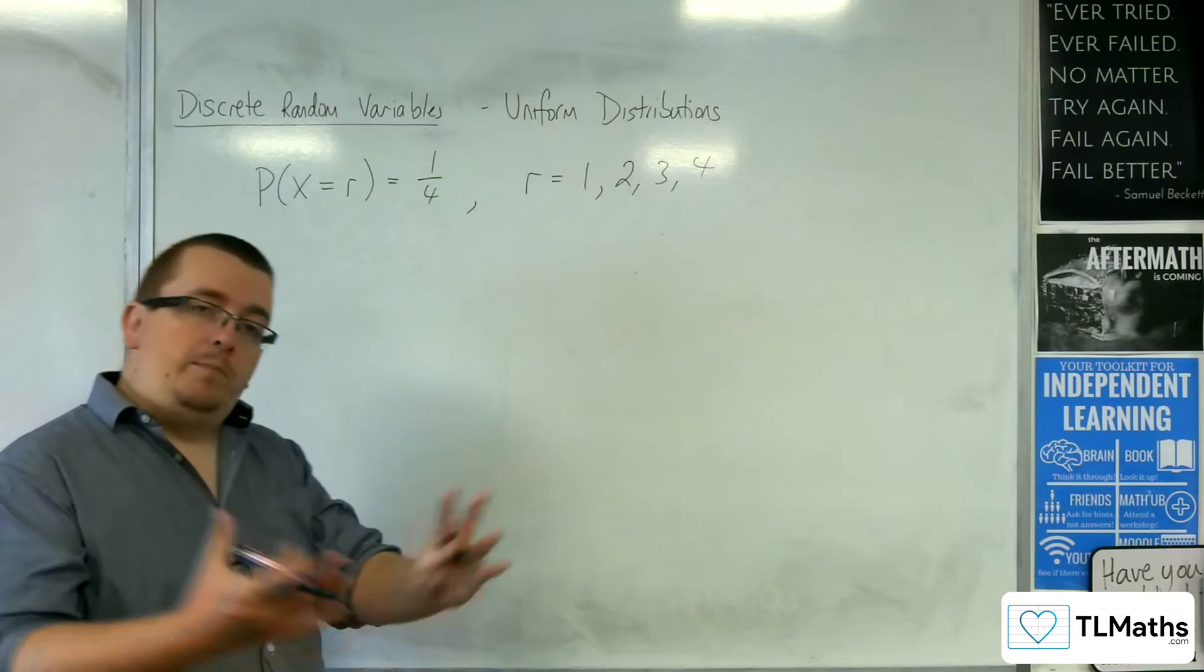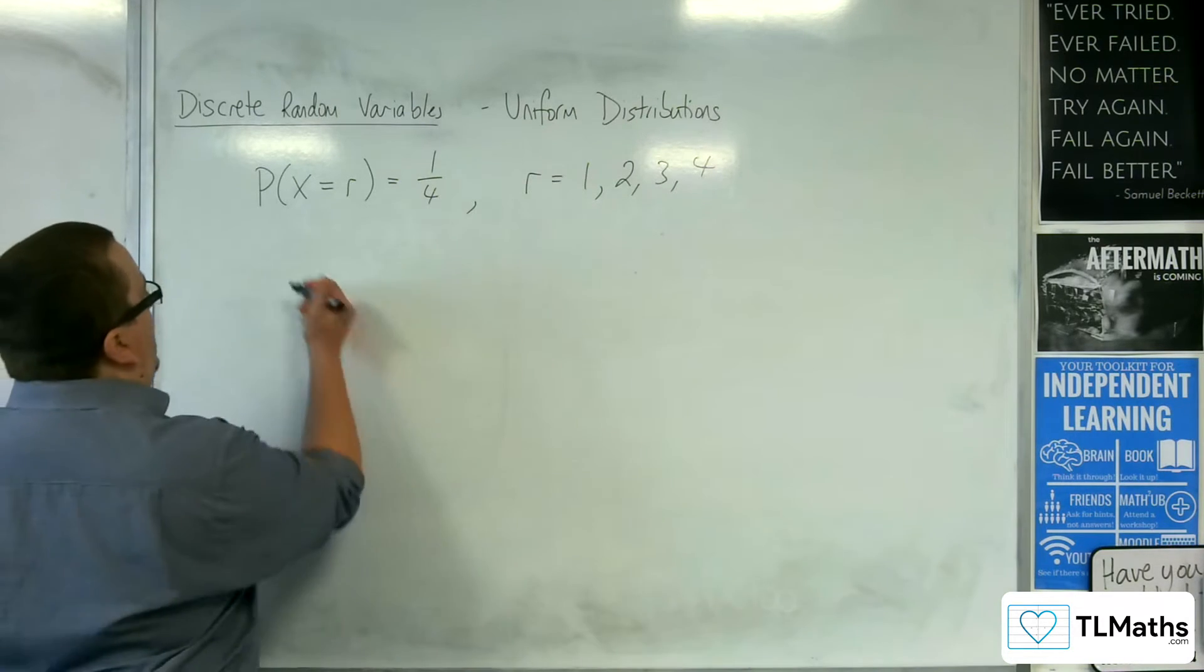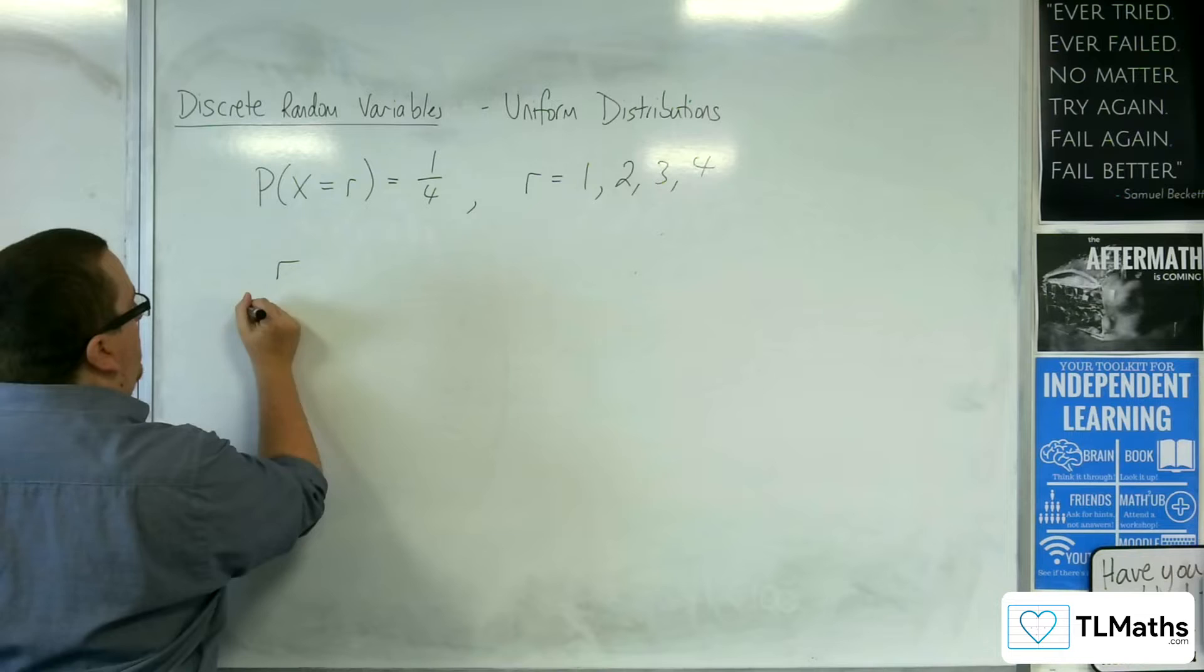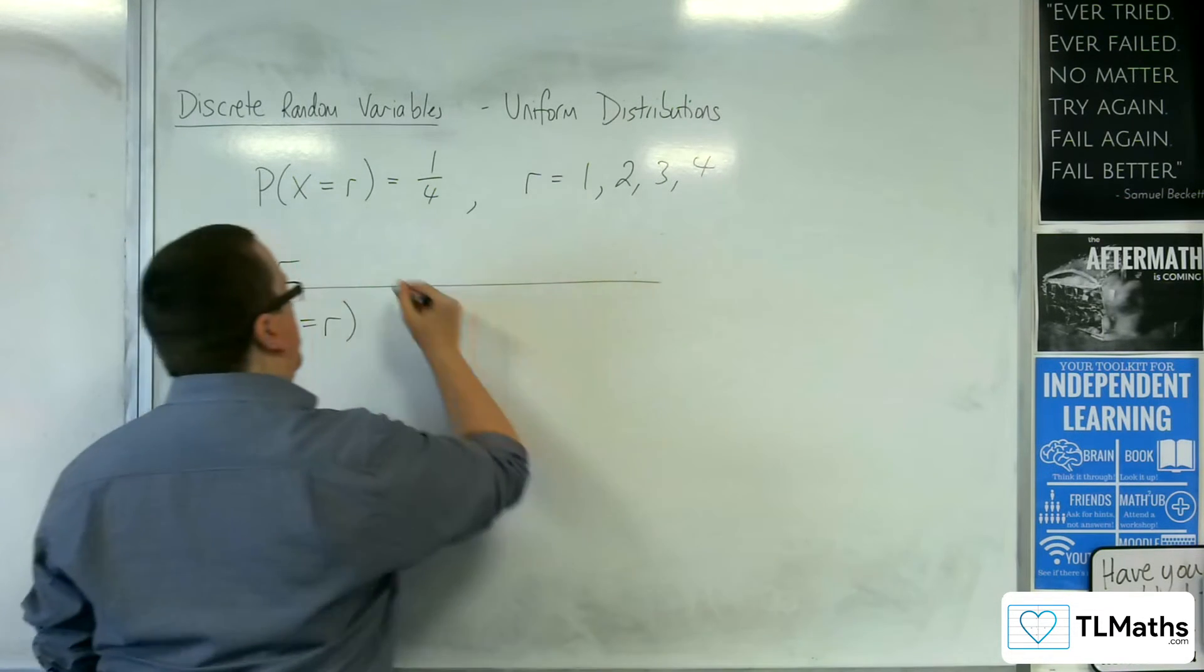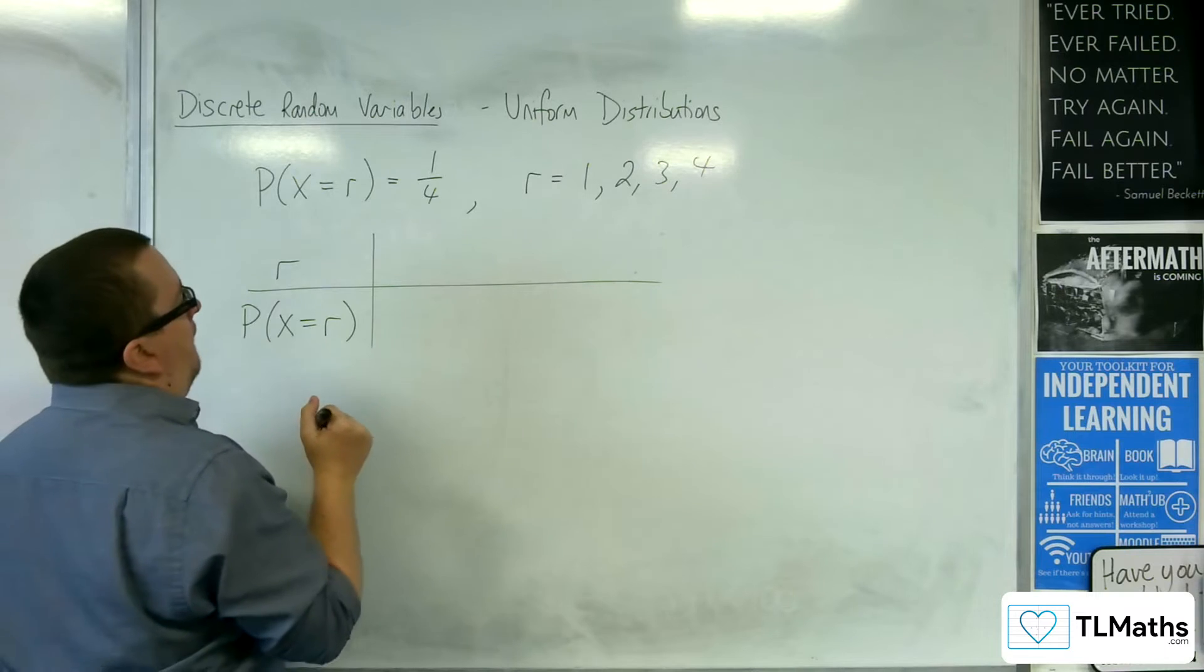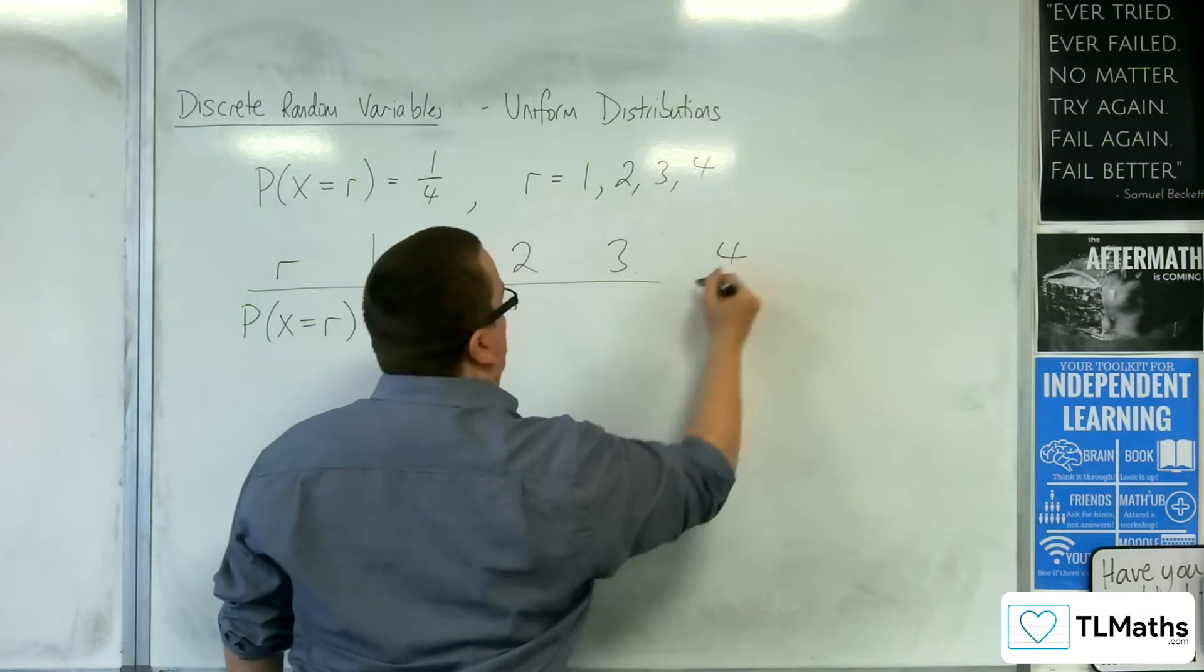And so it's the same for each value. The consequence of that would be that in your table, if you had a table for your distribution to show how it's distributed, then you've got the one, two, three, and four.